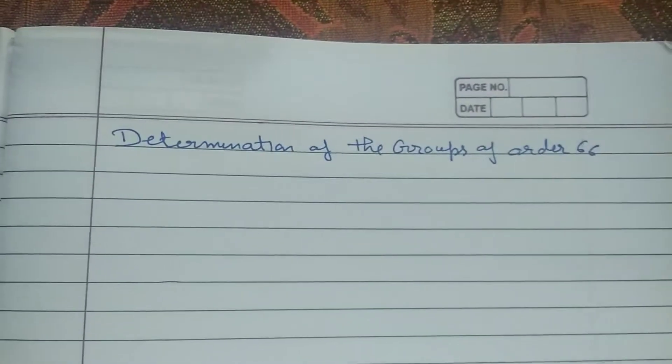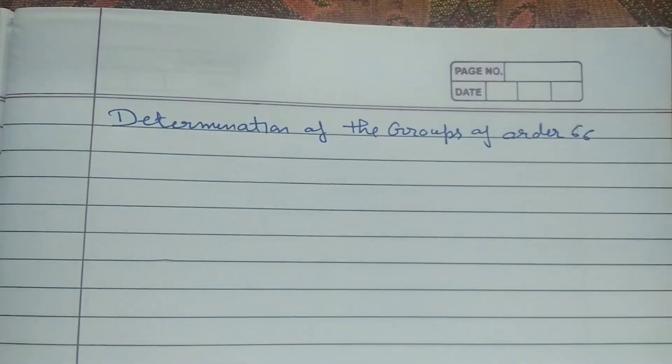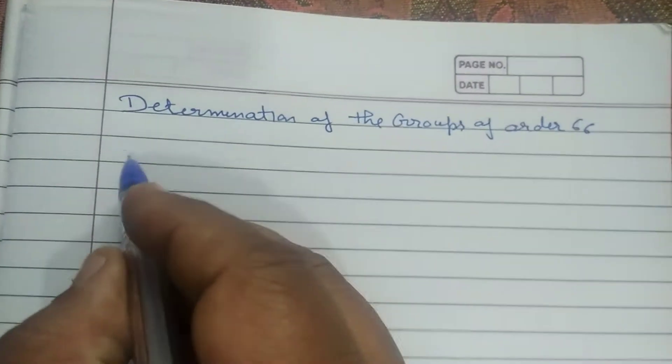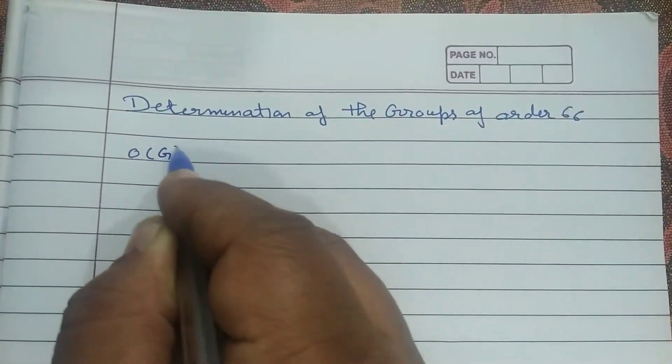Aaj ka hamara vishya hai Groups of order 66. If order of G is 66.